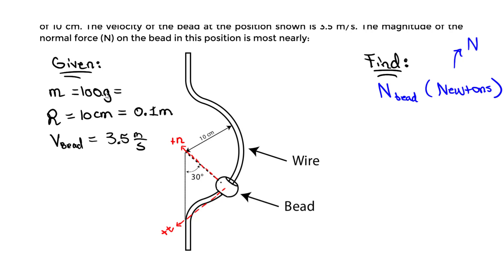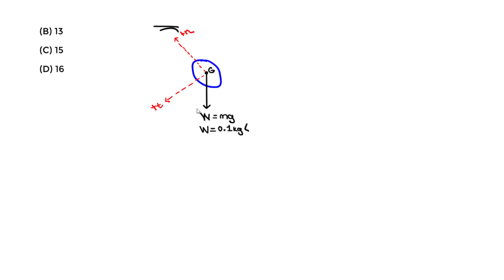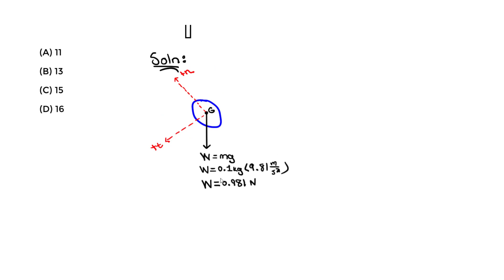So 0.1 kilograms times gravity of 9.81 m/s² gives us 0.981. The units are kilogram·meter/second², which is newtons — from F = ma. So the weight force is 0.981 N acting vertically downward.